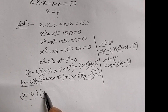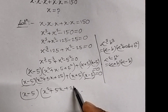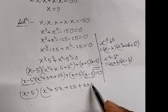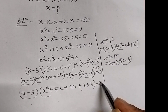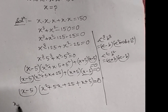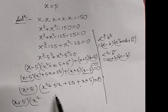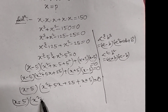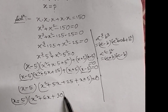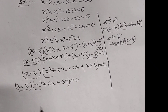We are left with x minus 5 into x square plus 5x plus 25 plus x plus 5 equal to 0. Then the next step will be x minus 5 into x square plus 5x plus x plus 6x plus 25 plus 5, which is 30, bracket close, equal to 0. Here x minus 5 equals 0, and the product of two quantities equal to 0.